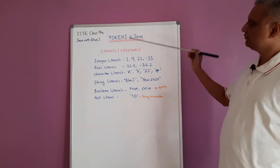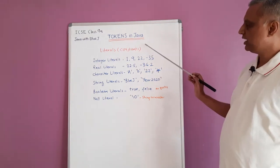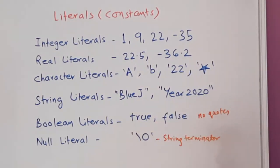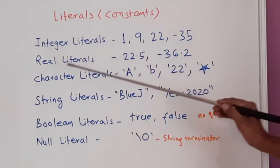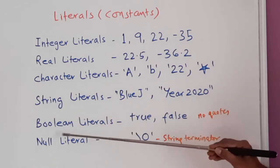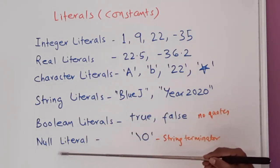Now let us see what are the literals or constants as tokens. This is the classification of literals or constants. There are integer literals, real literals, character literals, string literals, boolean literals and a null literal.